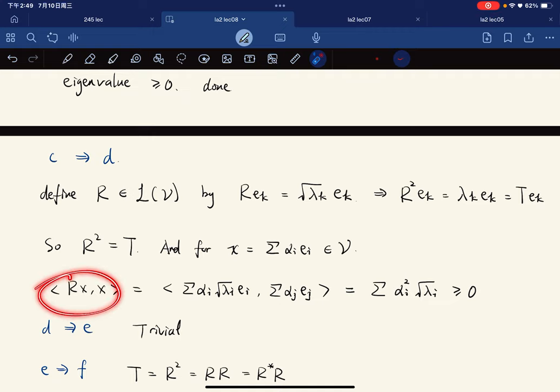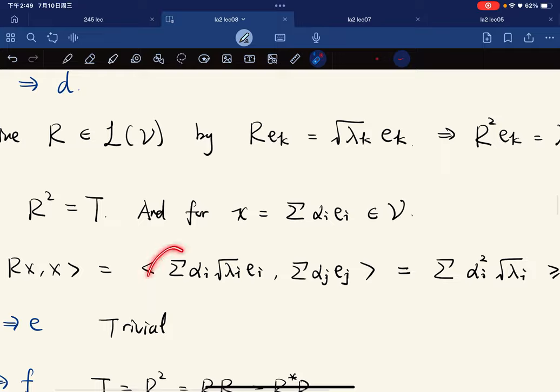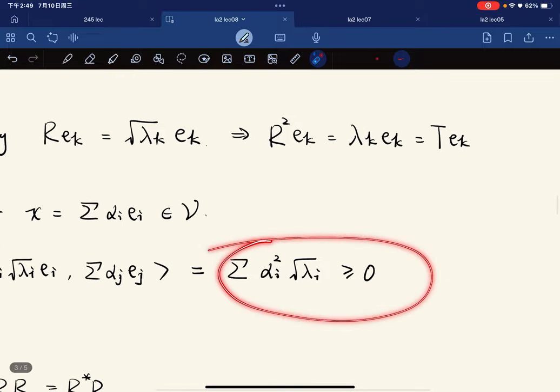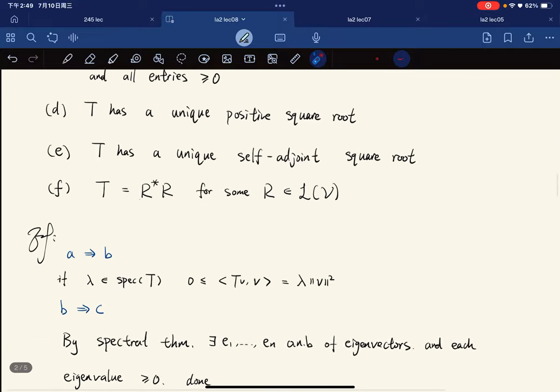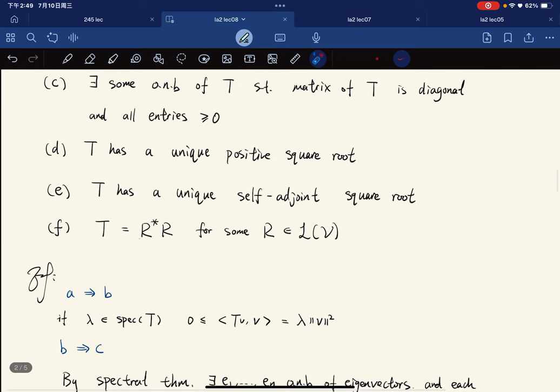To show that R is positive, <Rx,x> we just calculate this, and it gives us something non-negative. And D implies E: positive implies self-adjoint.